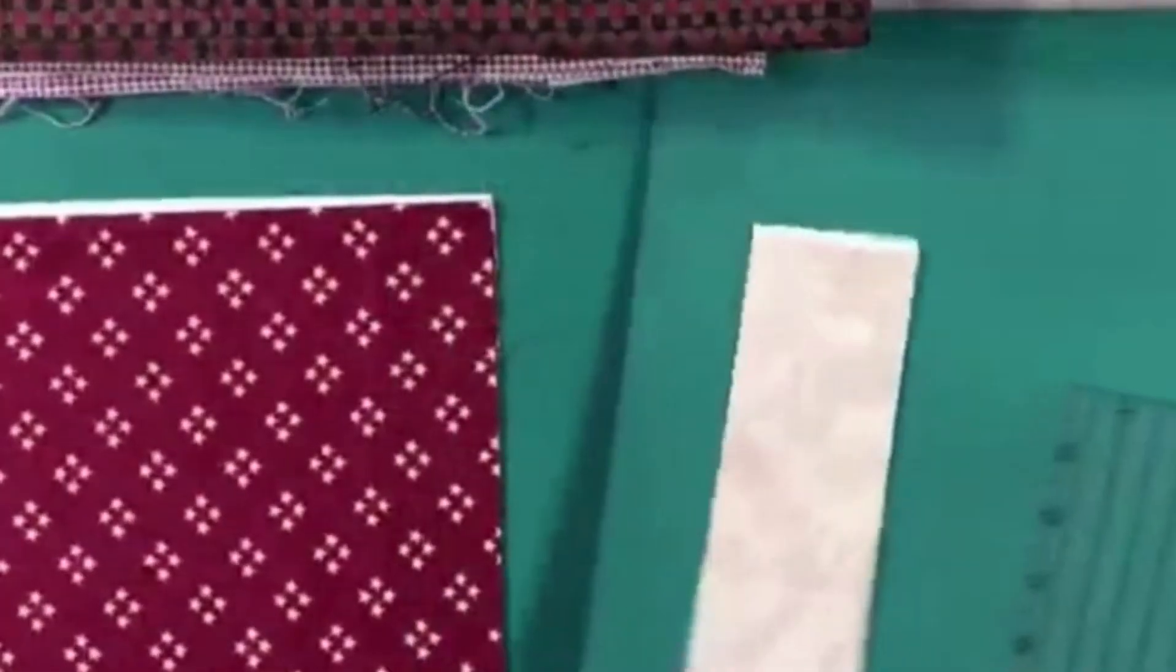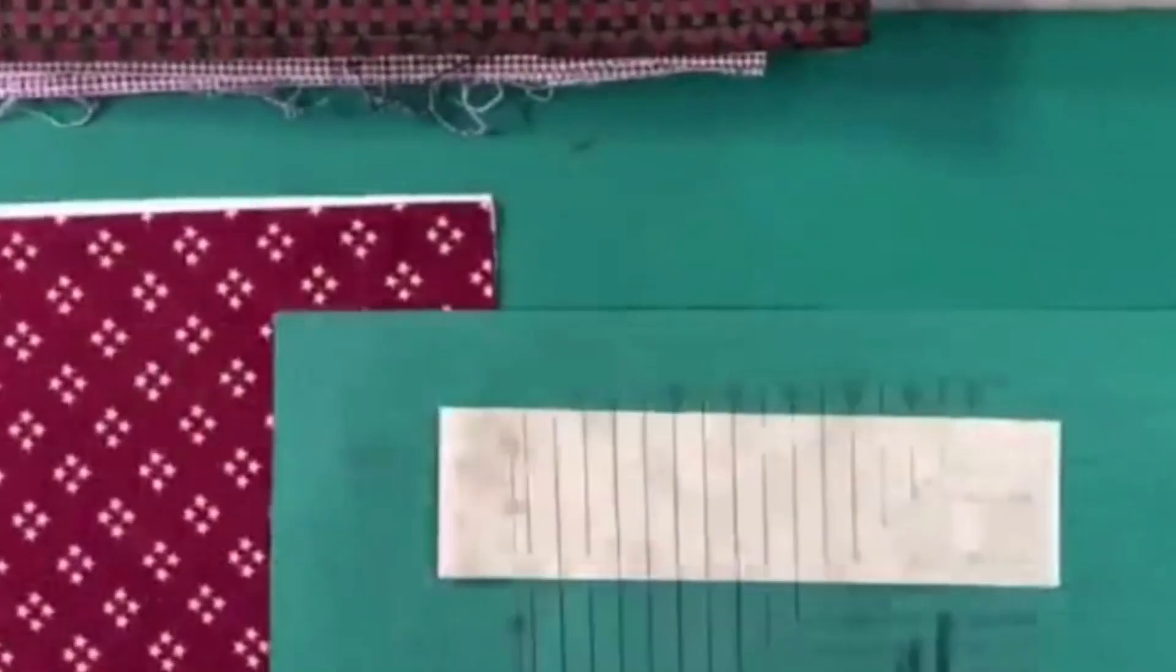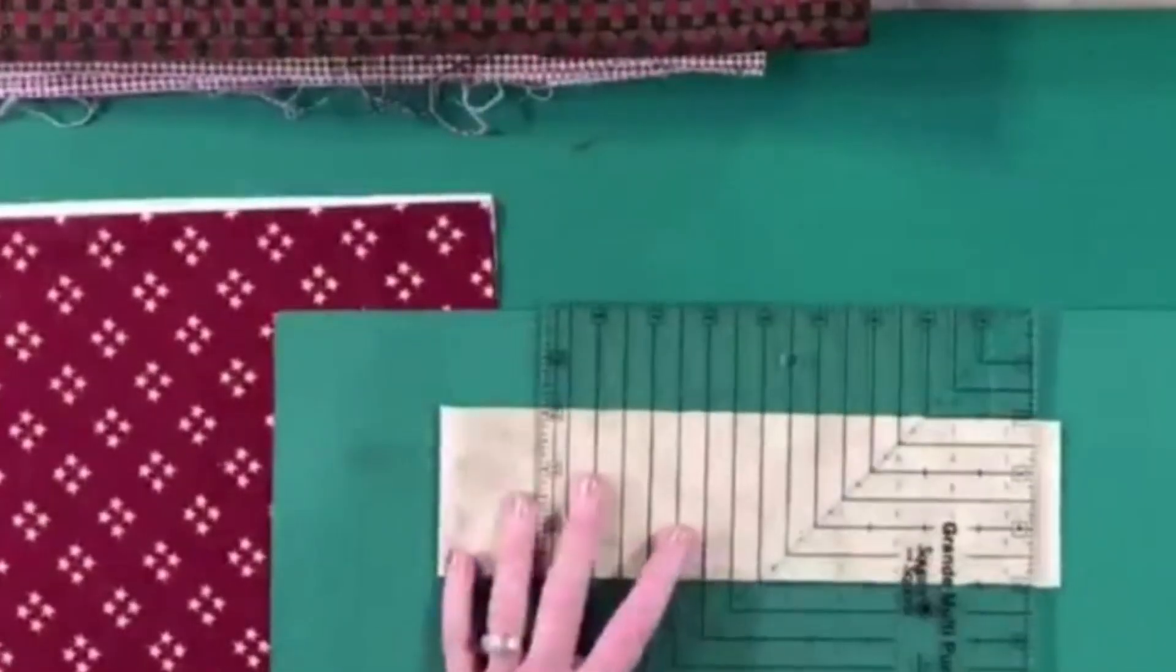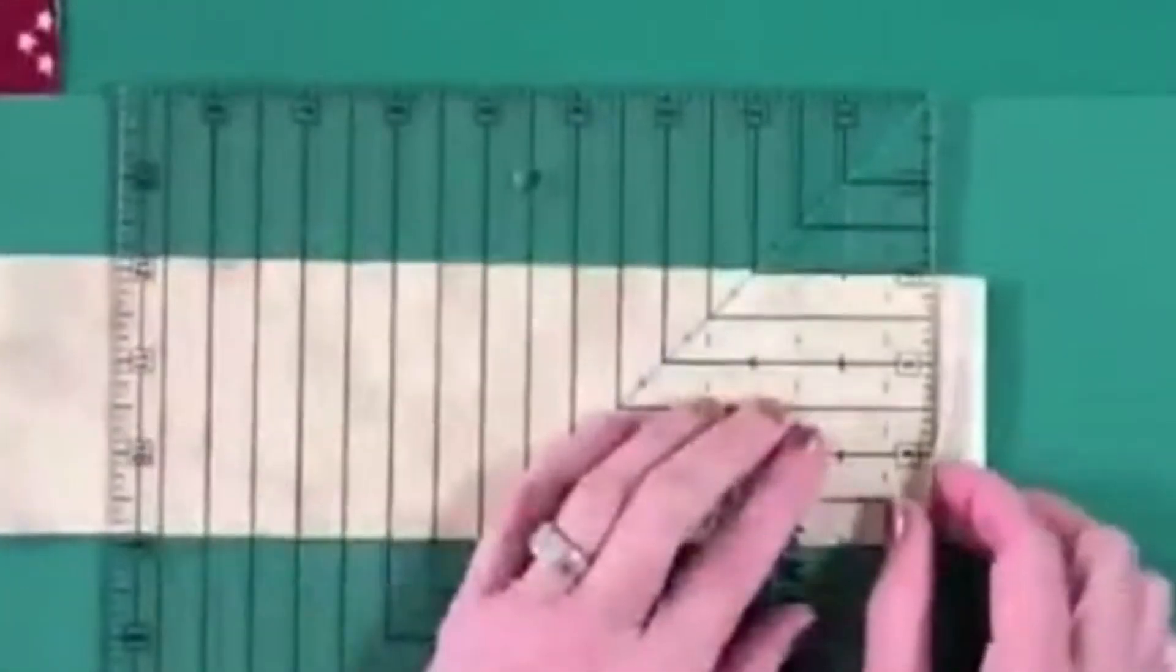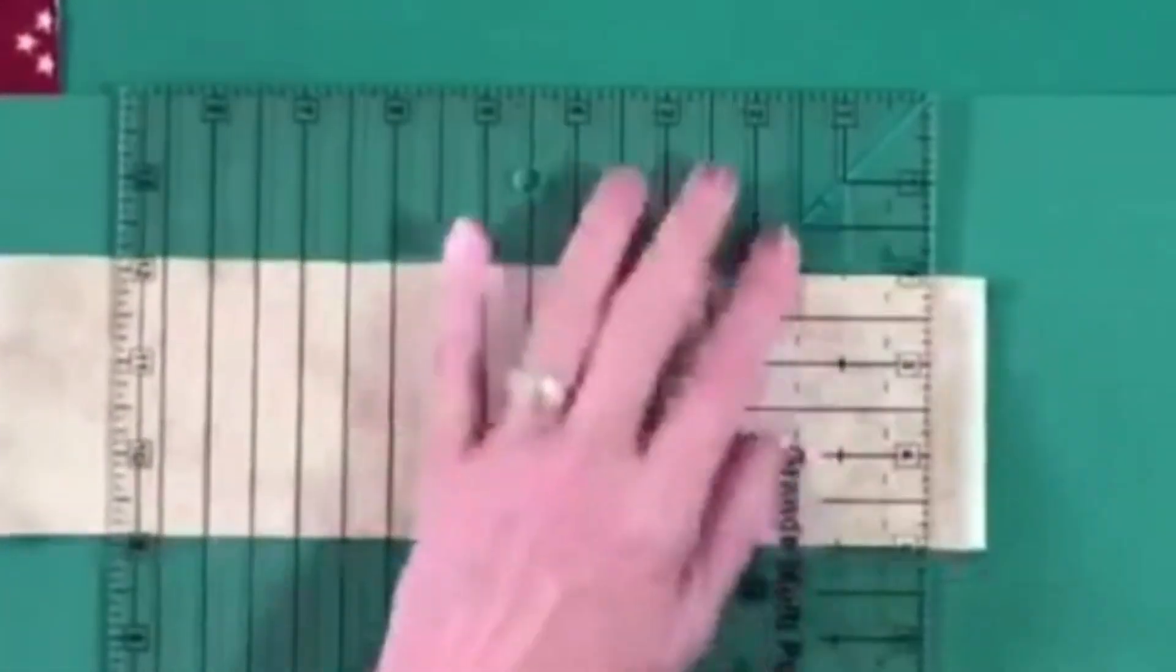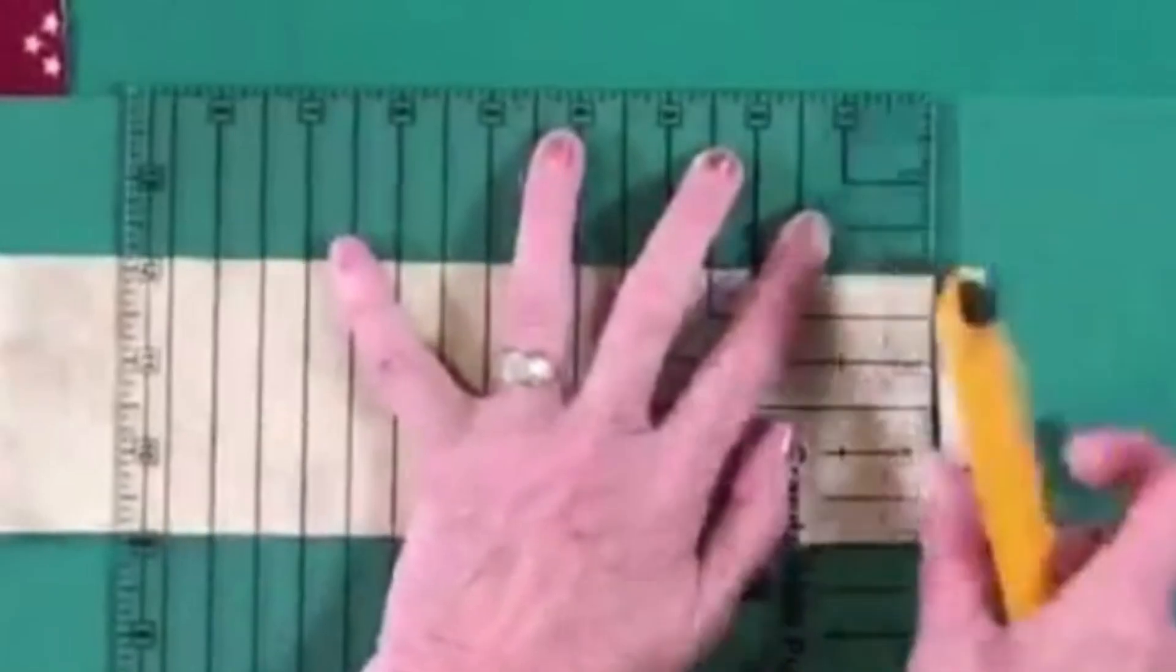So once again, I'm going to turn my mat. I need to do a cleanup cut. So I'm just putting a line on the ruler along the cut edges and I'm backing it in a little bit so that I can get my cleanup cut there. I'm going to turn my mat.